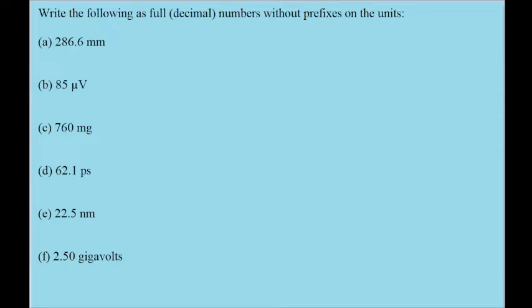So for our a here, we've got 286.6 millimeters. If there was only one m, that would be meters, but since we've got another m in front of it, that's millimeters. That small m can be taken to mean the prefix milli, which means a thousandth.